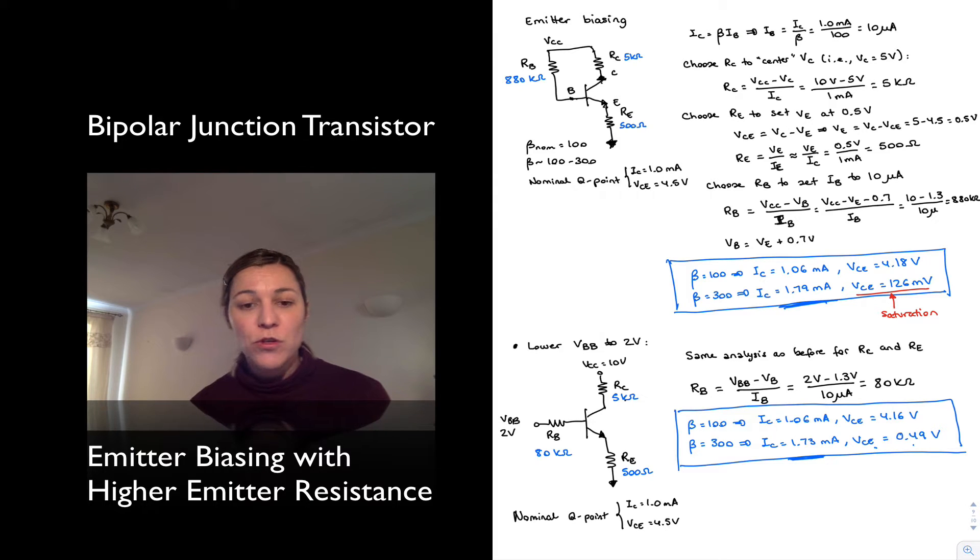So we're going to make another modification to this emitter biasing configuration and see if we can improve those results. The modification we're going to do is we're going to increase the voltage drop across the emitter resistor. In these previous cases we had set that voltage drop to 0.5 volts, and we're doing that right here. We're going to increase that, we're going to double it and set it to 1 volt and see if we get an improvement.